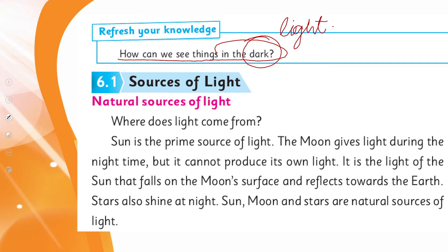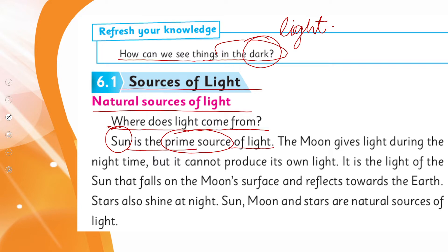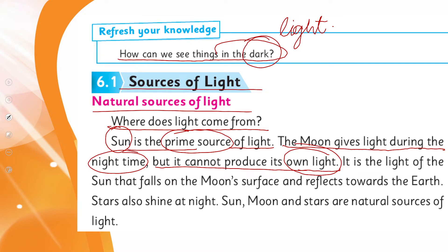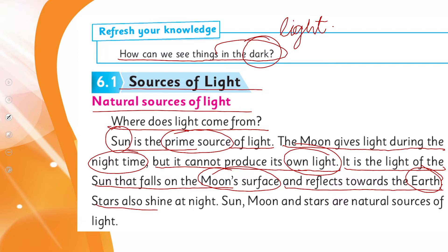Sources of light — natural sources of light. Where does light come from? The sun is the prime or main source of light. The moon gives light during the night time, but it cannot produce its own light. It is the light of the sun that falls on the moon's surface and reflects towards the earth. Stars also shine at night. So sun, moon, and stars are natural sources of light.